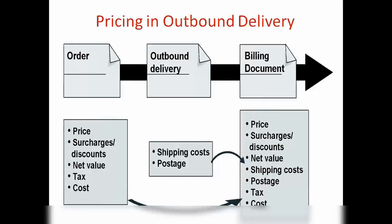Pricing in outbound delivery — you could have a shipping cost or postage cost, anything. In the billing document, for example, pallet cost — if you want to send the cost for the pallet as well. When you're doing the billing, the system will copy the prices from the sales order. Then you can add extra prices — pallet cost, postage cost, shipping cost — to that billing as well. So the billing document will show the actual product cost plus the shipping cost.